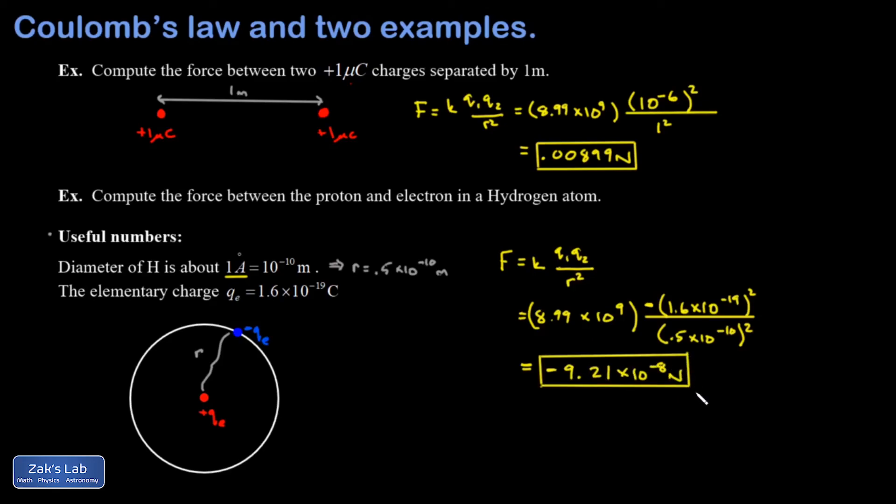And when I run the numbers, I get negative 9.21 times ten to the negative eighth newtons. Again, in Coulomb's law, the minus sign means we're talking about an attractive force. In some versions of this question, you might just be asked for the magnitude of the force and then you just ignore the minus sign.